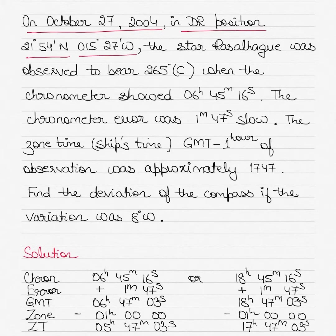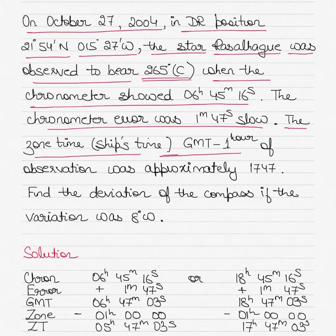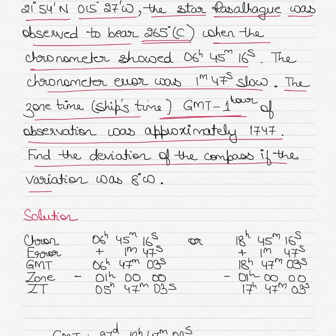The DR longitude is 15° 27' West. The star is Rasalhague and it was observed to bear 265° compass, so the compass bearing of the star was 265°. The chronometer showed 6h 45m 16s; the error of the chronometer was 1 minute 47 seconds slow. The ship's zone time was 1 hour behind GMT, and the zone time on the ship was approximately 17:47. You have to find the deviation of the compass if the variation was 8° West.